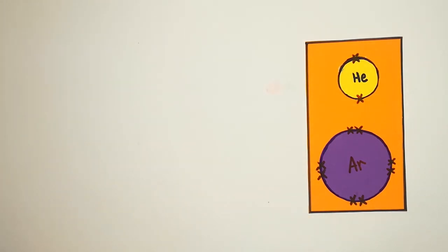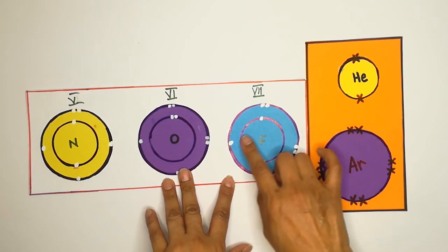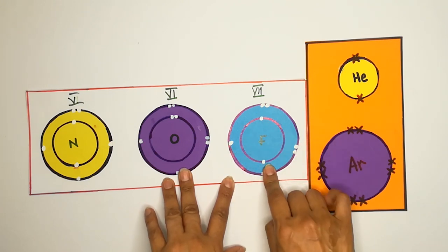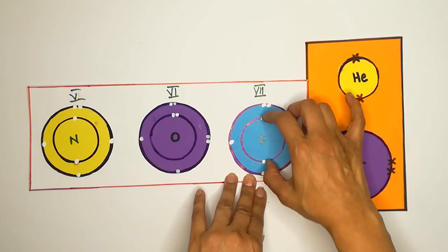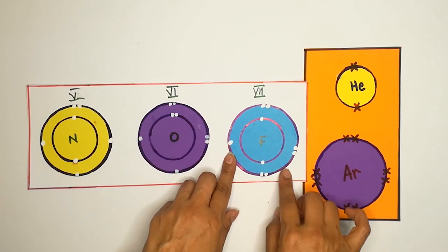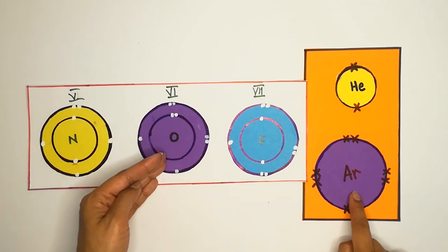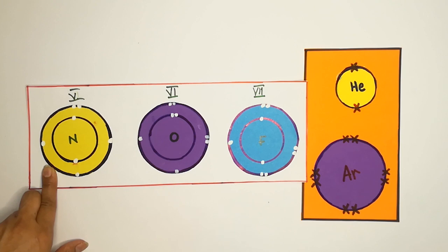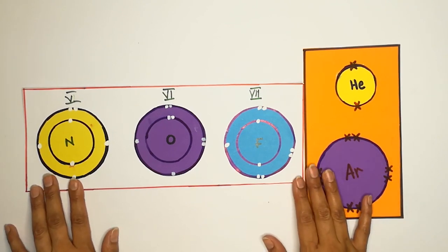Ab non-metals ki example dekhte hain — 7th ya 17th group ke elements. Fluorine ke total nine electrons hain: 2, 7 — outermost mein saat. Yeh apne electrons nahi dega; yeh ek electron le lega apna octet poora karne ke liye. Isi tarah 6th group ke elements ke paas 6 valence electrons hain — inhe do chahiye, to yeh do electrons gain karenge octet follow karne ke liye. Nitrogen ke paas 5 outermost electrons hain — yeh teen electrons gain karega apna octet complete karne ke liye.